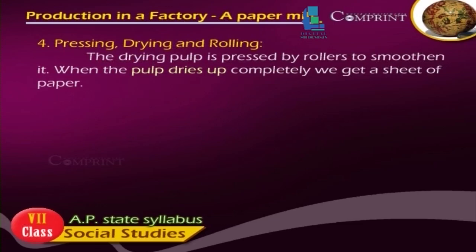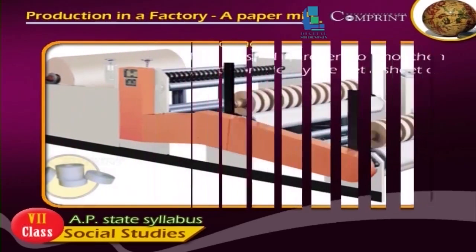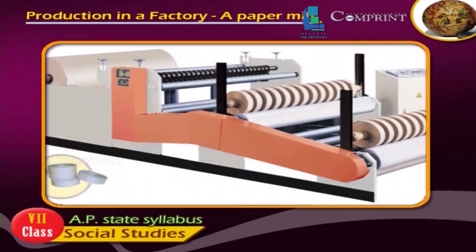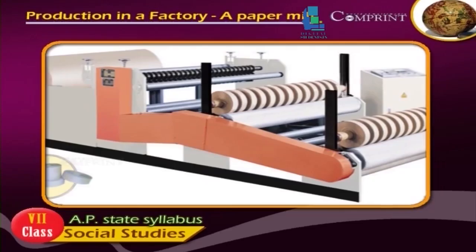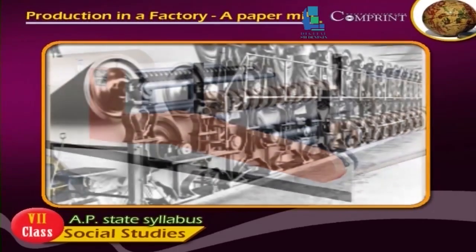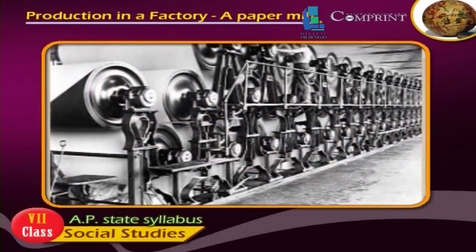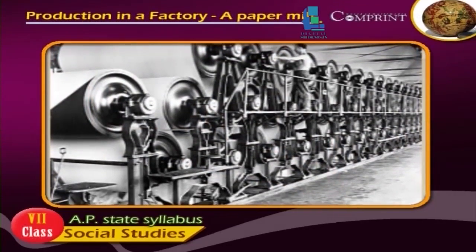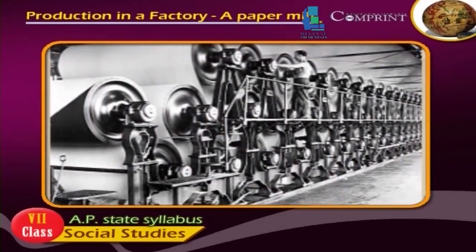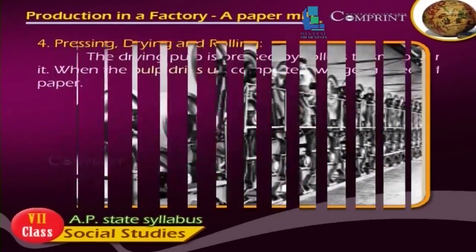Stage 4 — Pressing, Drying, and Rolling: The drying pulp is pressed by rollers to smoothen it. When the pulp dries up completely, we get a sheet of paper.